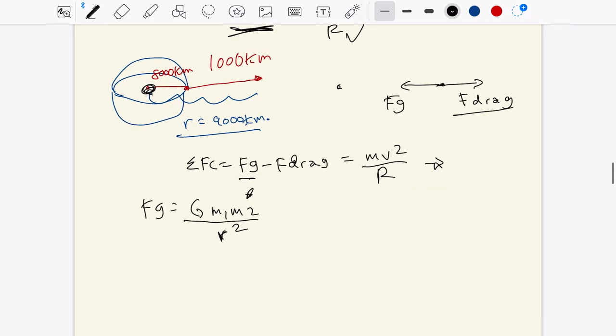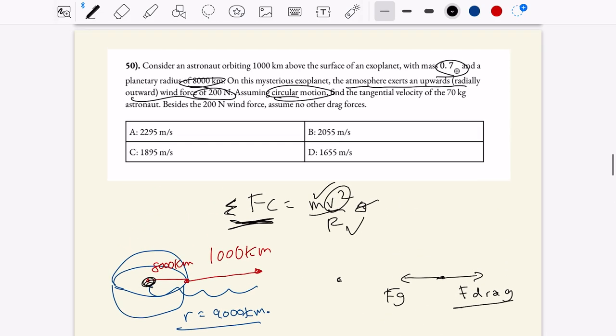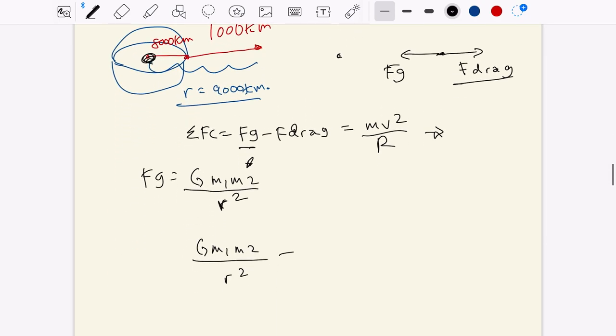So we have the f-drag force right here. We're drawing a free body diagram, by the way. So f-drag of 200 newtons, and then here we have fg. So this is the force of gravity supplied by the exoplanet. And so we're going to write that fc equals fg minus f-drag, which is equal to mv squared over r. So let's go ahead and let's compute what fg is. fg is going to be equal to g m1 m2 over r squared. And we have all these values given by the problem.